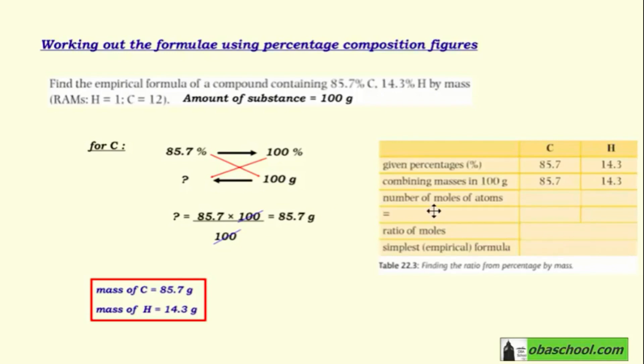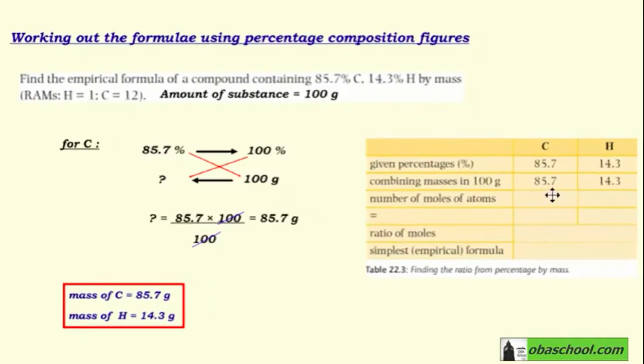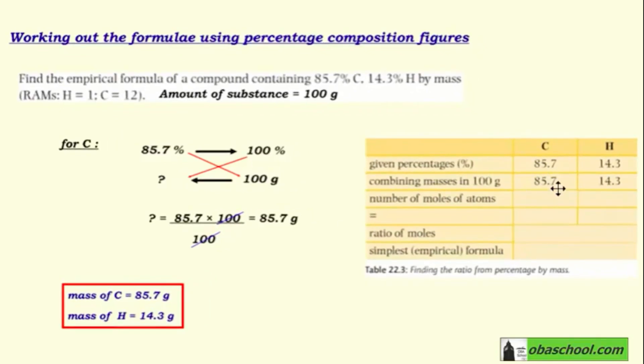Number of moles equals the mass divided by the mass of one mole, which is 85.7 over 12 for carbon, which is the relative atomic mass. And for hydrogen, the mass is 14.3 divided by 1, which is the relative atomic mass of hydrogen.